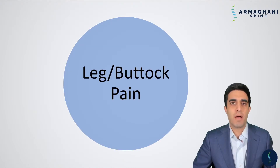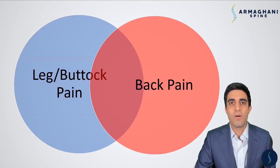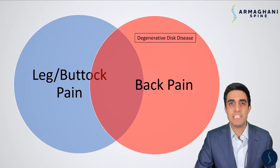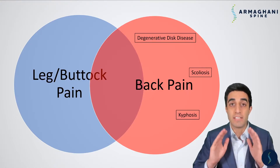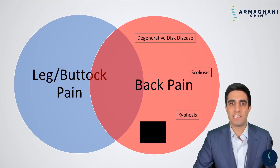When surgeons think about the causes of a patient's issue, we consider the location in which it occurs. Patients can have discomfort or pain in their leg or buttock area, just their back, or a combination of both. Conditions that can cause purely back pain include degenerative disc disease, which happens with normal aging; scoliosis, a curvature of the spine from side to side; kyphosis, a curvature front to back; and then there's the unknown category — muscle imbalances or arthritis of the joints.